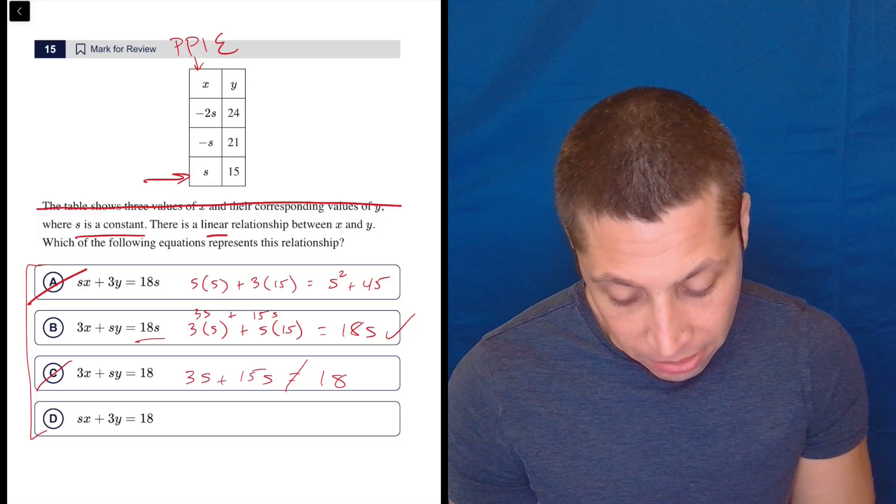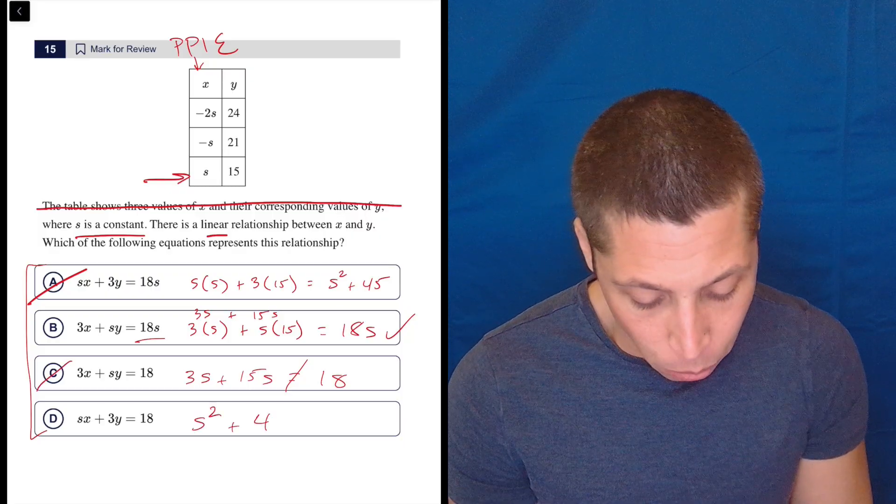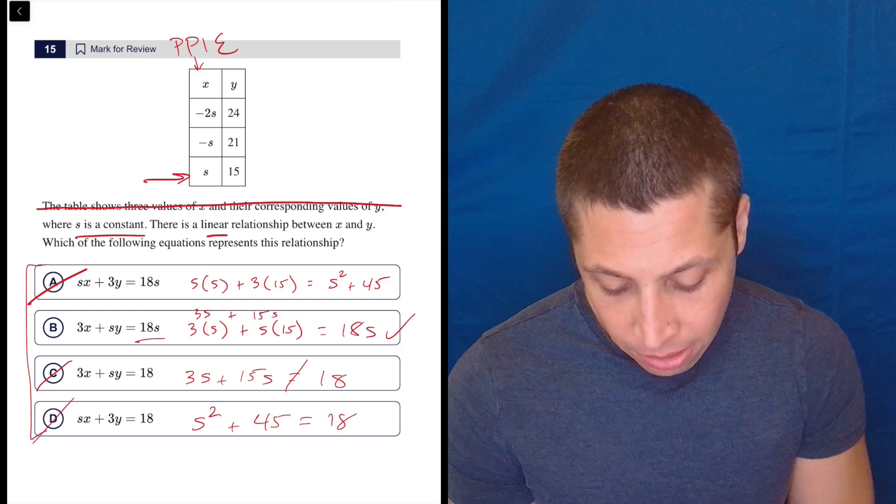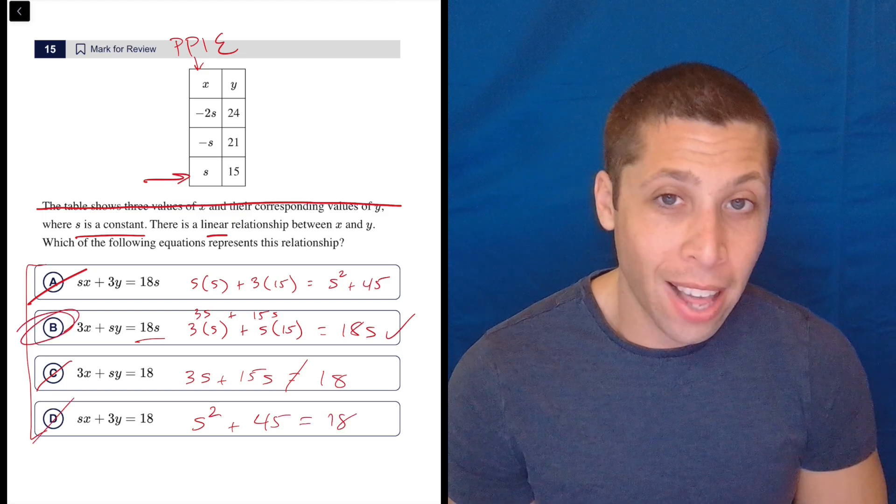And this is also the same problem as a, where we're going to get an s squared plus 45 is equal to 18. So, no, that doesn't work either. So, just like that, it's b.